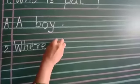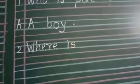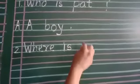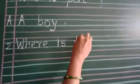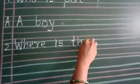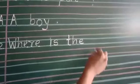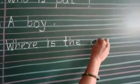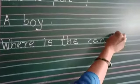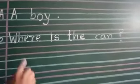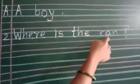Question number 2. W-H-E-R-E, where, one finger gap. I-S, one finger gap. T-H-E, the, one finger gap. C-A-N. Where is the can?